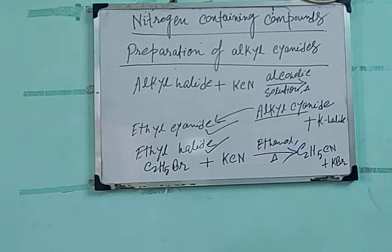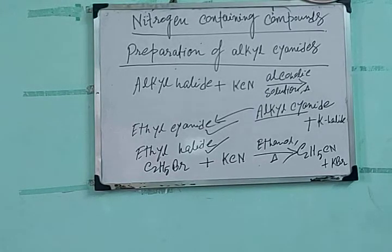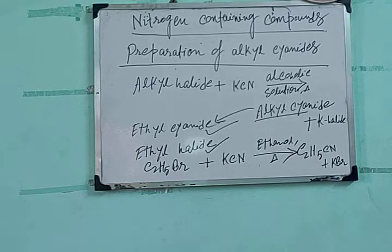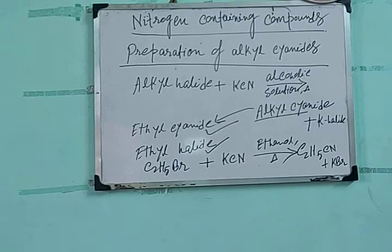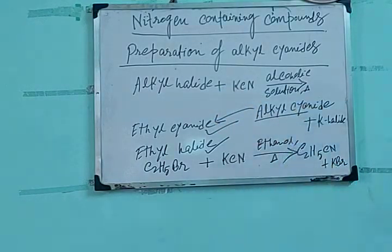Remember that this process — reaction with potassium cyanide in alcoholic medium — is only for the preparation of alkyl cyanide, not for aryl cyanide. Different methods exist for the preparation of aryl cyanide. So this particular method is specifically for alkyl cyanide preparation.